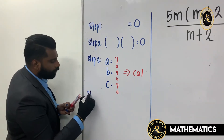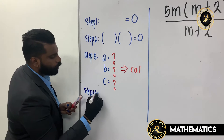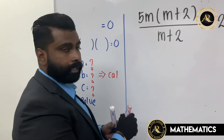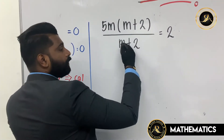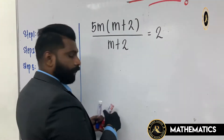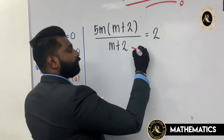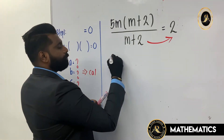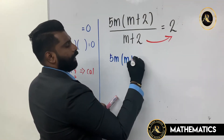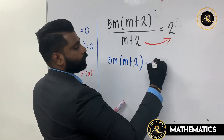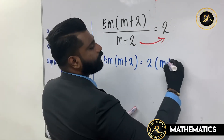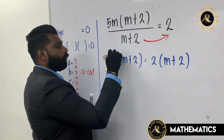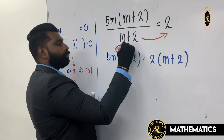Step number four: we will solve the equation. We call this solving the equation. The denominator will go to that side, so step one — we throw this equation to that side. So whatever: 5m bracket (m + 2) equals to 2 bracket (m + 2). Now you're going to expand the equation.